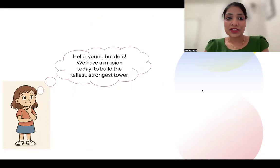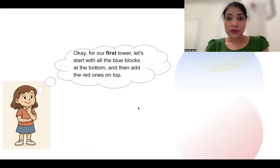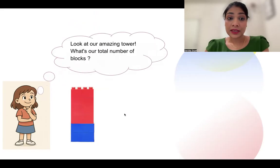Hello young builders. We have a mission today to build the tallest, strongest tower. Let's count what we have: two blue blocks and four red blocks. Okay, for our first tower, let's start with all the blue blocks at the bottom, and then add the red ones on the top. Look at our amazing tower. What's our total number of blocks? Two plus four? Six.